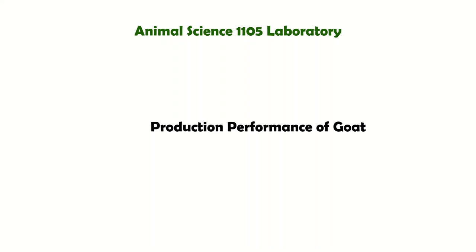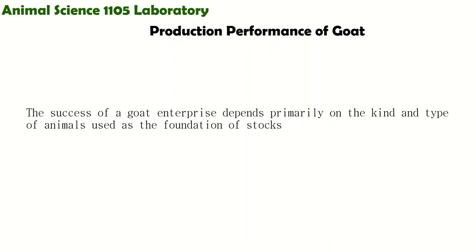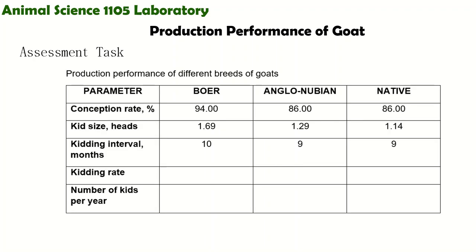Hi class! Our last topic in Animal Science 1105 Laboratory is all about the production performance of goat. The success of a goat enterprise depends primarily on the kind and type of animals used as foundation stock, because breeder stocks are selected based on physical features and their productive and reproductive performance.